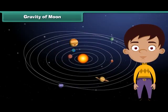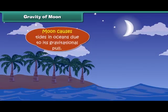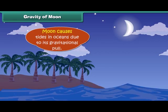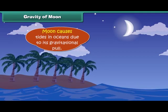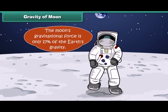You can find big moons in our solar system, but our moon is the biggest compared to the size of Earth, and it is large enough to cause tides in the oceans due to its gravitational pull. Moon's gravitational force is only 17% of Earth's gravity. For example, a 100-pound (45 kg) person would weigh only 17 pounds, that is 7.6 kg, on the moon.